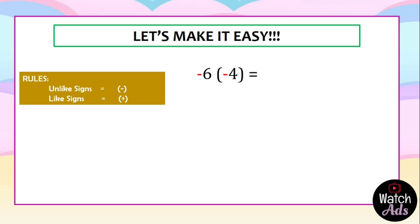Now let's go back to our rules. For like signs, the answer is positive. Since the sign of negative 6 is negative and the sign of negative 4 is also negative, the answer is positive. We then multiply 6 and 4 — the answer is 24.